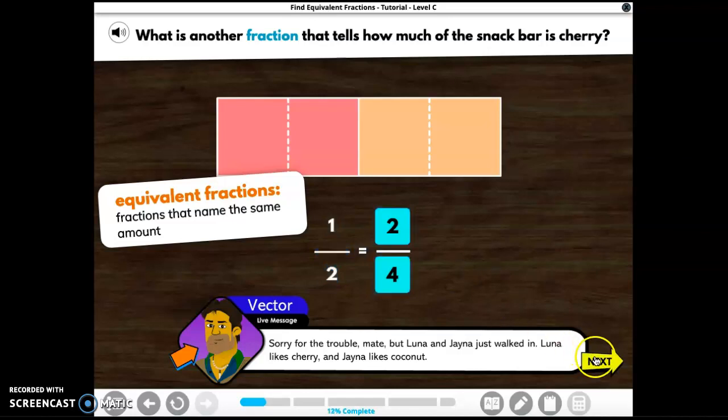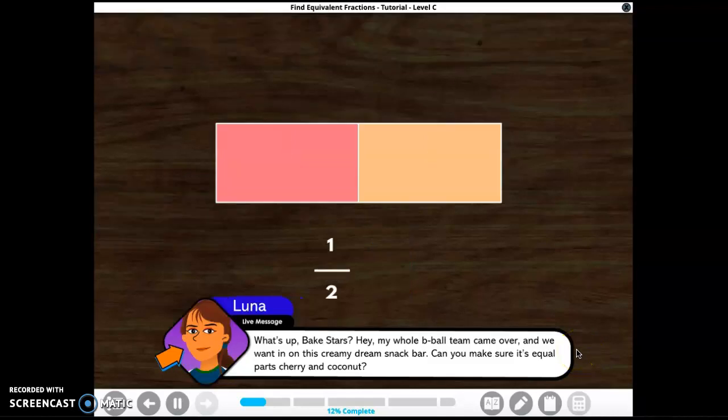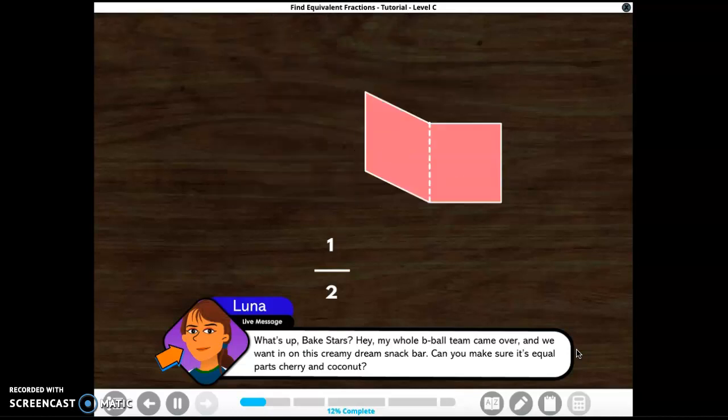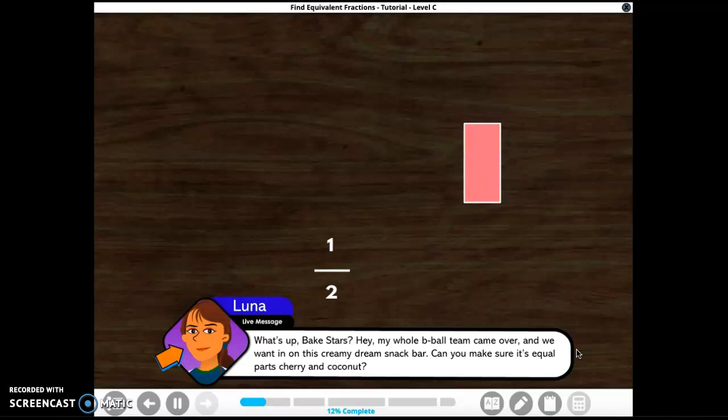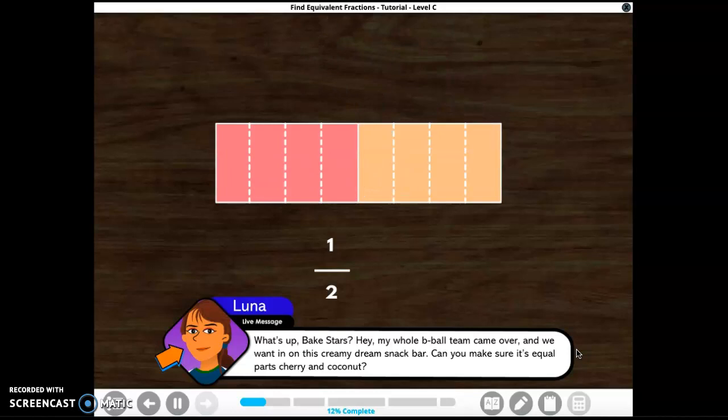Perfect. Take a look-see at Luna's message. What's up, big stars? Hey, my whole basketball team came over, and we want in on this creamy dream snack bar. Can you make sure it's equal parts cherry and coconut? Easy peasy. Let's break out our snack bar picture. If we fold it again, we can divide the snack bar into even more pieces. Check it out. The pieces keep getting smaller, so we need more of them to name the same amount.